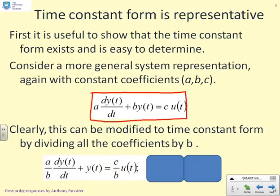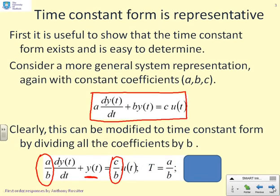Hopefully this is obvious to most viewers. What I'm going to do is divide every term in the equation by b. So you'll see on the left, I've now got (a/b) dy/dt, then plus 1 times y(t) because b/b is 1, and then (c/b) u(t). This is now in time constant form where capital T is a/b and capital K is c/b. So we've shown that for an arbitrary first-order form, you can always move it into time constant form, and we're going to assume that you have done that for all the examples in this set of videos.